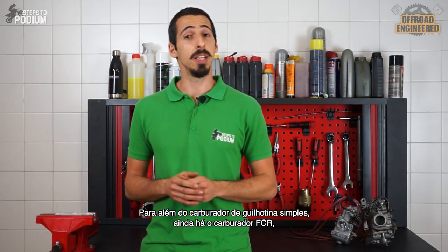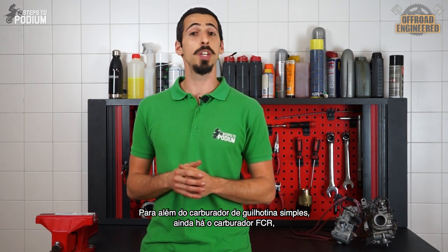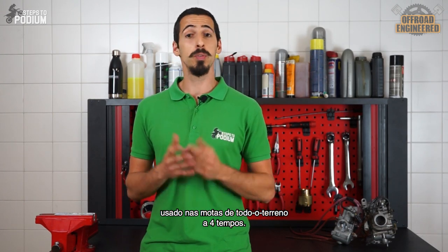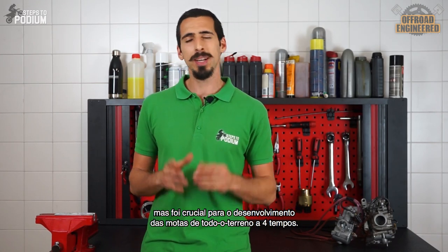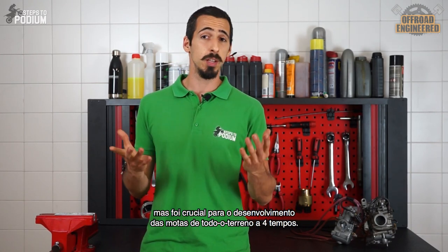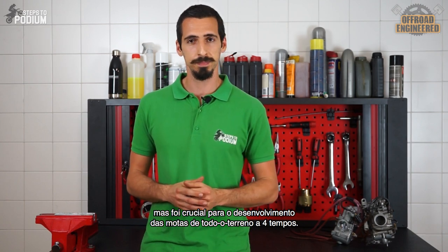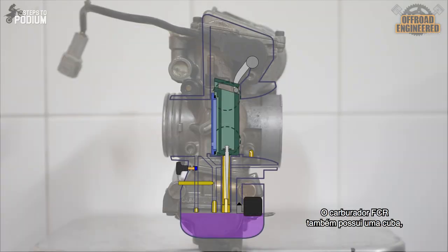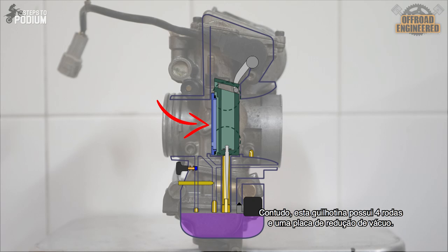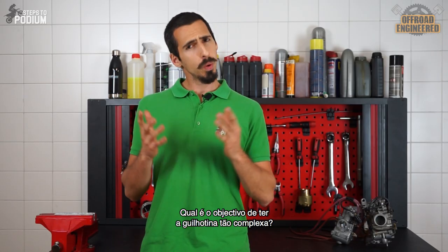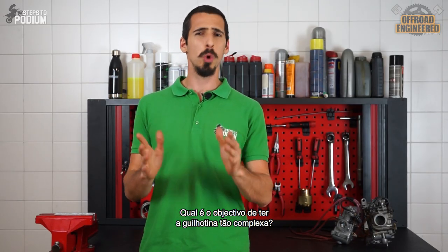Besides the mechanical slide carb, there's also the flat CR carburetor, usually found in 4-stroke dirt bikes. This carb isn't as simple as the mechanical slide one, but it was a game changer for the development of 4-stroke dirt bikes. The flat CR carburetor also has a float bowl, an idle and main jet, adjustment screw, and a slide. However, this slide has 4 small wheels and a vacuum release plate. So what is the purpose of making the slide so complex?